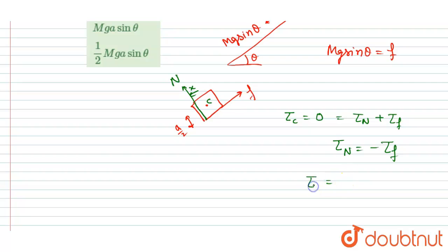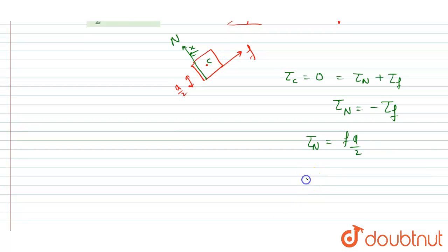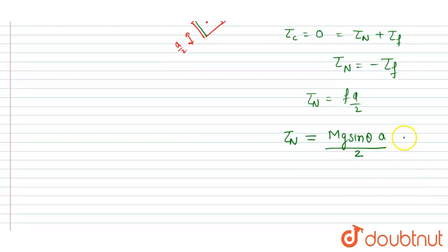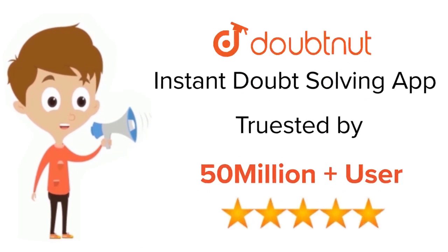The torque due to friction is f times a/2, since the line of action of the friction force is at a distance of a/2 from the center of mass of the cube. Substituting f equals mg sinθ, the torque due to the normal reaction about the center of mass equals mg sinθ times a/2. This is our answer.